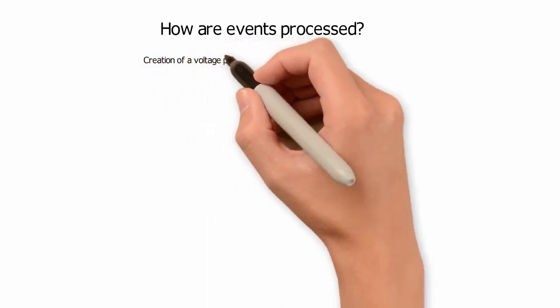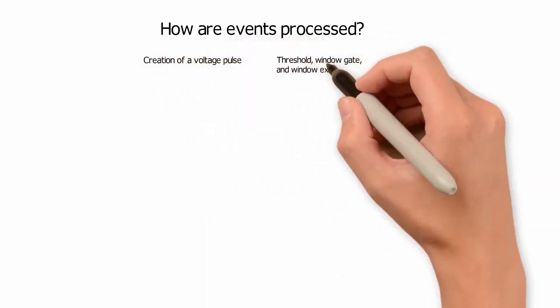Let's talk about the creation of a voltage pulse, how threshold, window gate, and window extension are related to each other, and how the system processes events and electronic aborts.